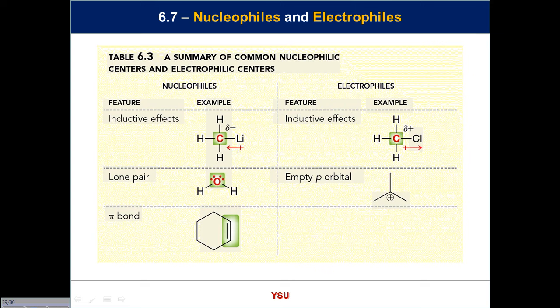This is a summary of the types of things you'll look for in mechanisms: where is the nucleophile, where is the electrophile, what has an electron deficiency, and what has electron excess. On the left, in a carbon-lithium bond, lithium is delta-positive and carbon is delta-negative — the pair of electrons in this bond serves as the nucleophile, because electron density is towards carbon as it is more electronegative.